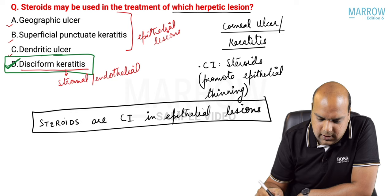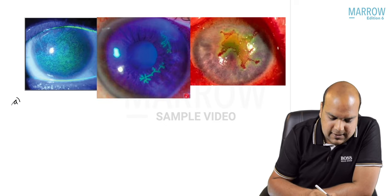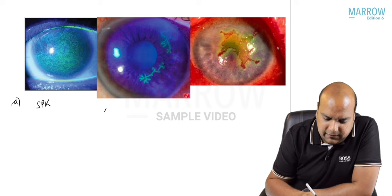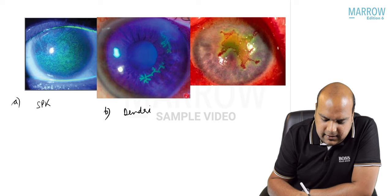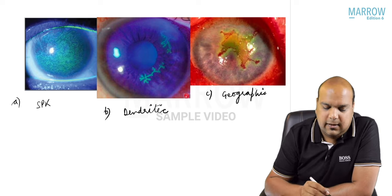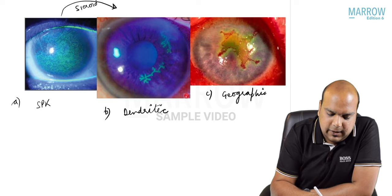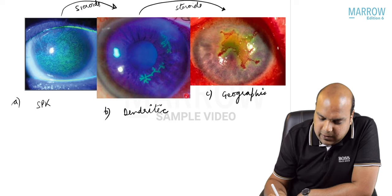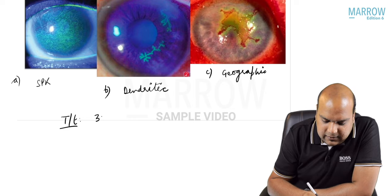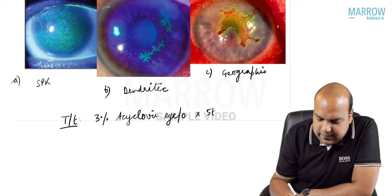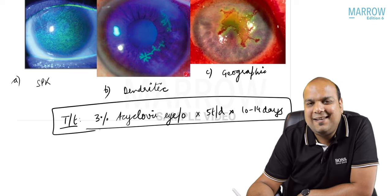Options A, B, and C are progressions of each other. SPK shows small dot-like lesions; dendrites form next (dendritic ulcer); then geographic ulcer forms. If steroids are given at the SPK stage it leads to dendritic ulcer; steroids at dendritic stage leads to geographic ulcer. All three are epithelial lesions - treatment is 3% acyclovir eye ointment five times a day for 10-14 days; steroids are contraindicated.